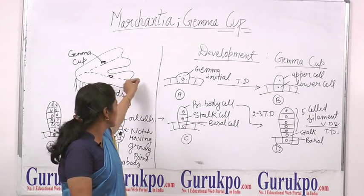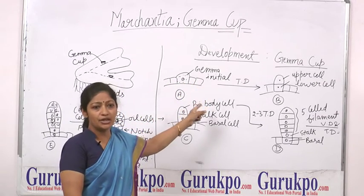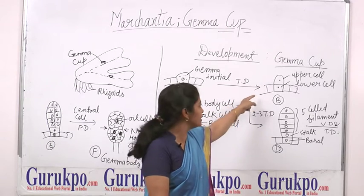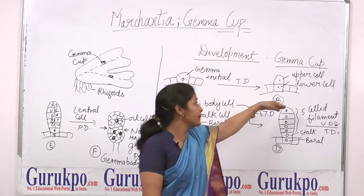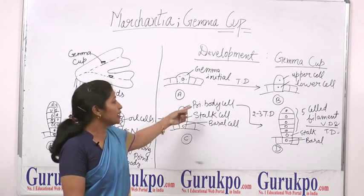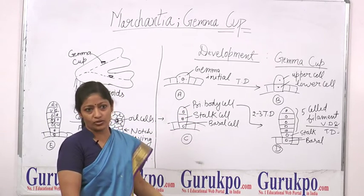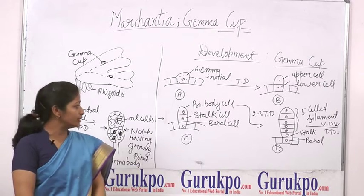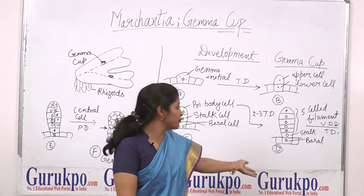These gemma bodies develop on the upper surface of the thallus. The uppermost cells, called gemma initial cells, first divide transversely into two cells: upper cells and lower cells. The lower cell is called the basal cell, and the upper cell further divides into the primary body cell and stalk cells.